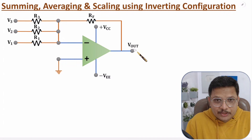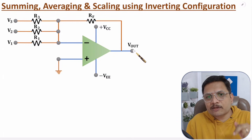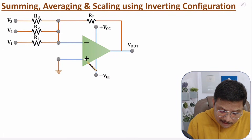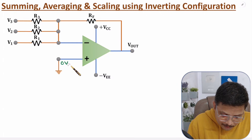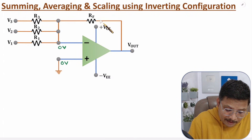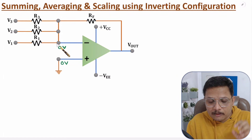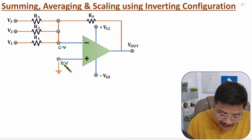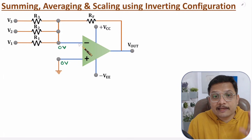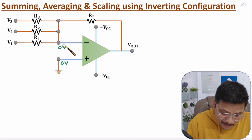To derive the output equation, recall a few basics. The positive terminal is connected to ground, so voltage there is 0V. Due to negative feedback, we have the virtual ground concept — voltage at the inverting terminal equals voltage at the non-inverting terminal, so that terminal is also at 0V.